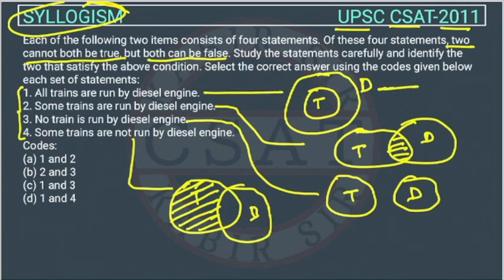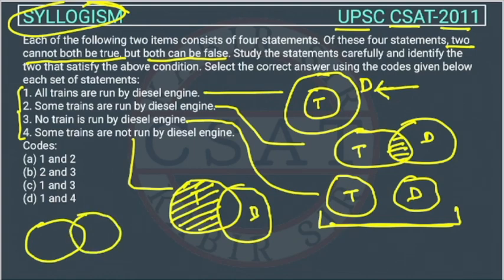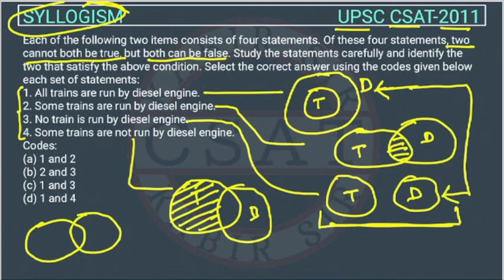Looking at the figures, the first and third statements are opposite — in the first, trains and diesel are inside each other (they have a relationship), while in the third they are apart with no relationship. So they both cannot be true at the same time; only one can be true. But both can be false: if not all trains run on diesel, that means some do, making the first false. And if the third is false, some trains are run by diesel engine. So both can be false but cannot both be true.